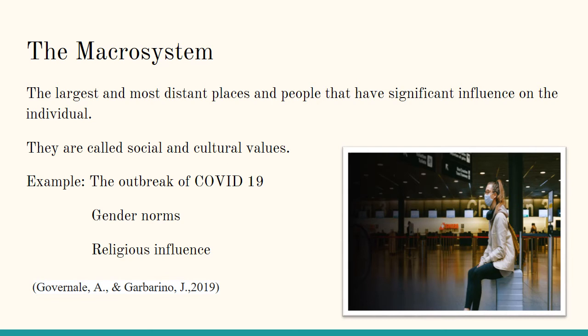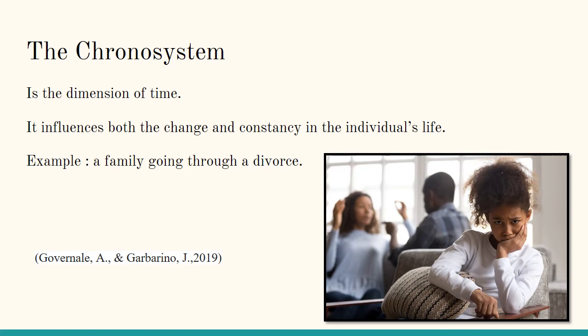In contrast, adolescents in urban communities are exposed to a wide variety of social activities and community programs. These programs may positively or negatively impact the development of these adolescents. The chronosystem is made up of the pattern of events and transitions that occur throughout a child's life, including any socio-historical events.